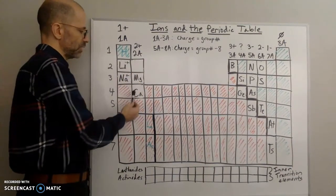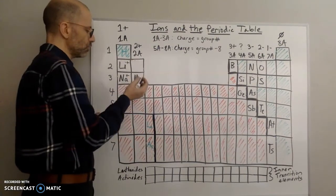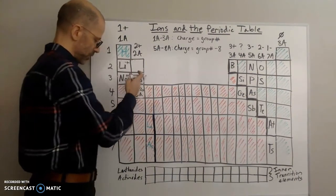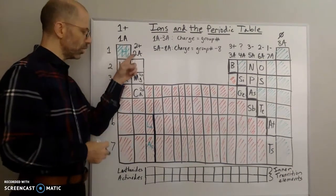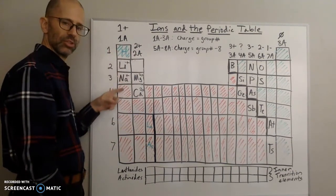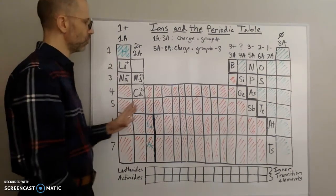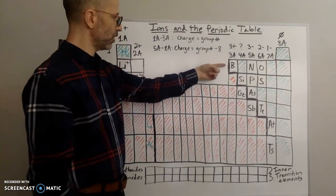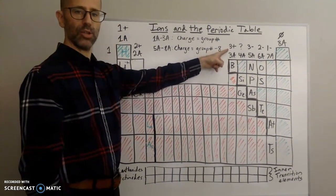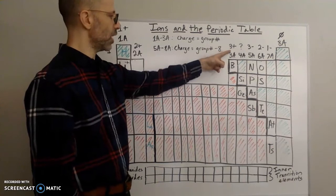Group 2A elements tend to have a positive two charge. These elements lose two electrons, giving them a 2+ charge. All elements in group 2A will form ions with a 2+ charge, and elements in group 3A will have ions with a positive three charge, giving up three electrons.